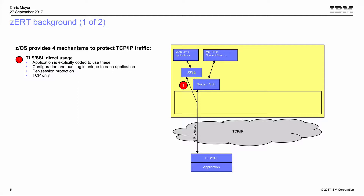On z/OS, we have two providers for the TLS protocol. One is System SSL, available to any C or C++ application — a full implementation of TLS and SSL up through TLS 1.2. We also have JSSE, the Java Secure Sockets Extension, which takes advantage of z/OS cryptographic hardware. Key middleware like MQ, CICS, and Connect Direct use System SSL directly.